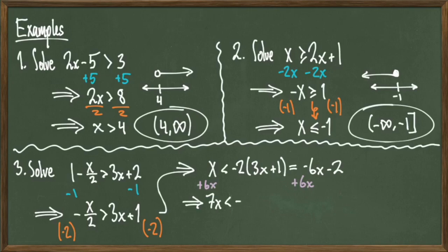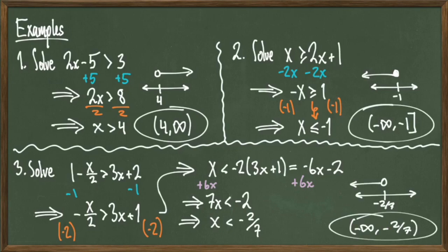Then I will add 6x to both sides to get 7x is less than negative 2, and then once I divide both sides by positive 7, I get x is less than negative 2 over 7. Here's how that's going to look on the number line, which will help me write out my interval, which is negative infinity to negative 2 over 7 open at negative 2 over 7.